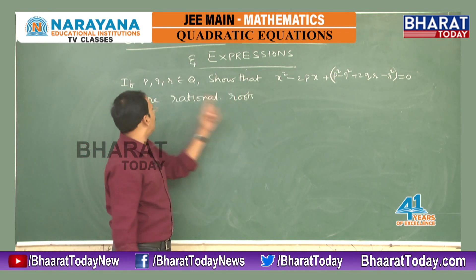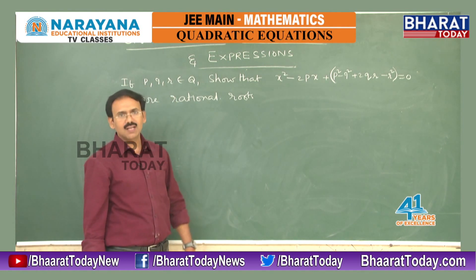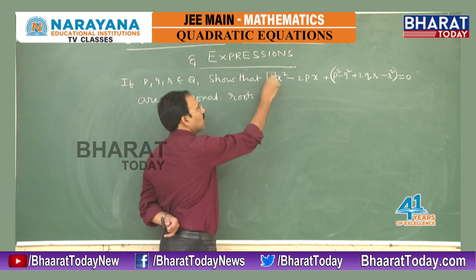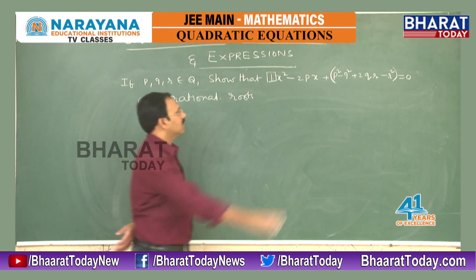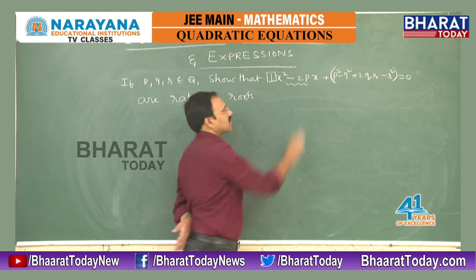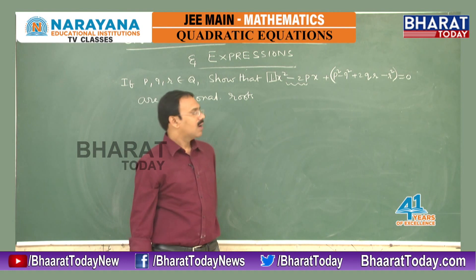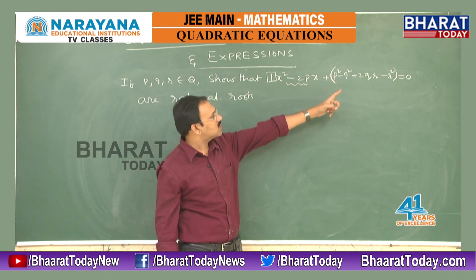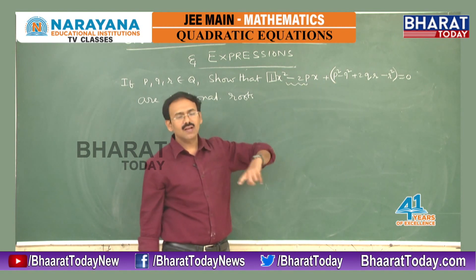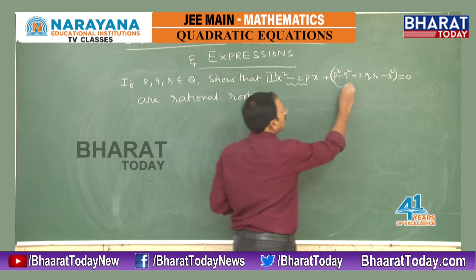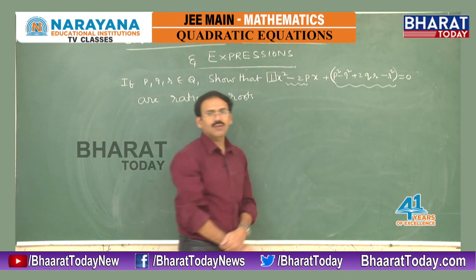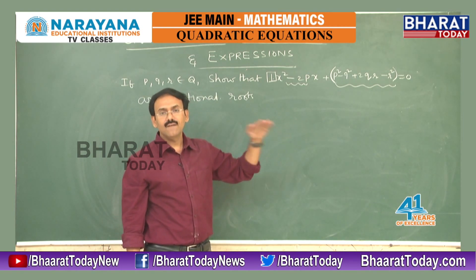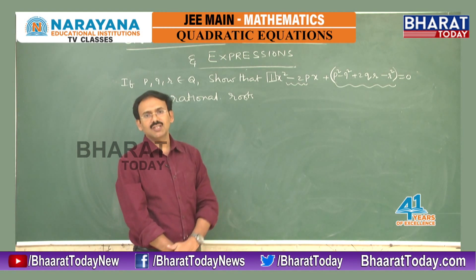Clearly P, Q, R are rational numbers. The coefficient of X² is 1, which is rational. Minus 2P is also rational. The term P² - Q² - 2QR + R² is also rational. So we are given a quadratic equation with rational coefficients.